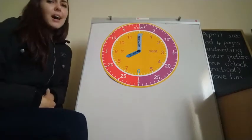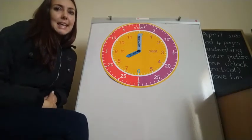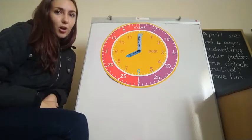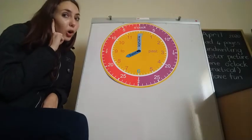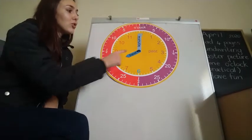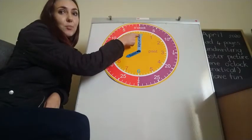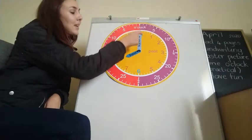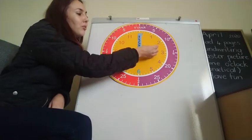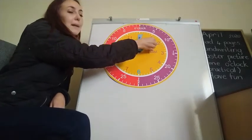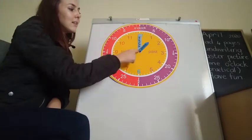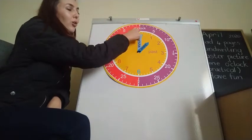Let's do some practice rounds. If I say that the time is 1 o'clock, I hear the word o'clock, so I know my minute hand must go to the 12 because it's zero minutes and my hour hand will move to the 1. Now the time is 1 o'clock.